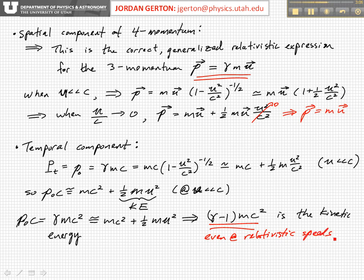So we have directly from the four momentum an expression for the total energy. The total energy of a particle is equal to p sub 0 c, which is equal to gamma mc squared.